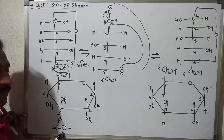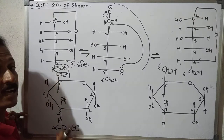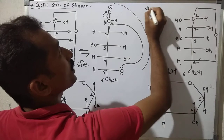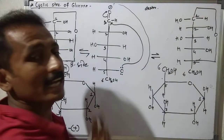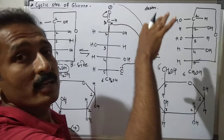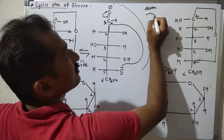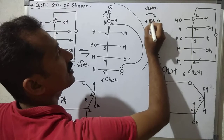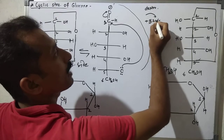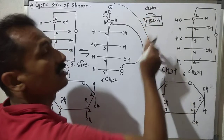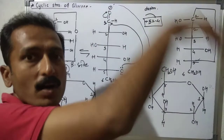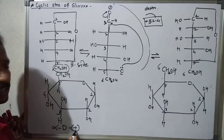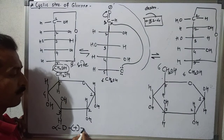Alpha-D glucose is dextrorotatory. Glucose is a dextrorotatory sugar — it rotates plane polarized light to the right side by an angle of +52.4 degrees. Therefore it has a positive rotation and is called a dextrorotatory sugar.